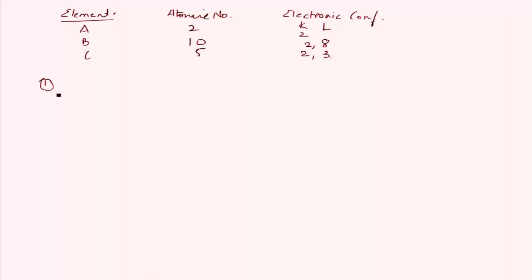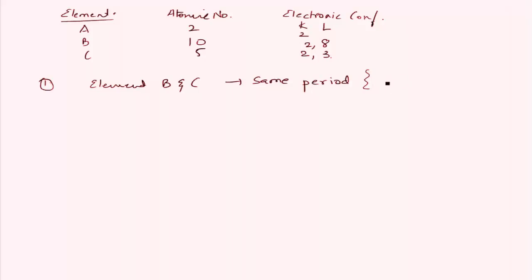Those elements which have the same valence shell belong to the same period. In this question, elements B and C both have L as their valence shell. Therefore, elements B and C belong to the same period, as they have the same valence shell L.